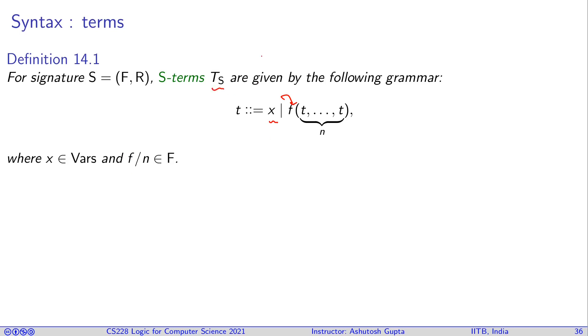Let's suppose your set of functions have symbols c, f, and g. The following is a term: x1 is a term because it's a variable. If you apply a function on x1, since f has arity one, this is a term. This is also a term because g has arity two and I gave it two variables.